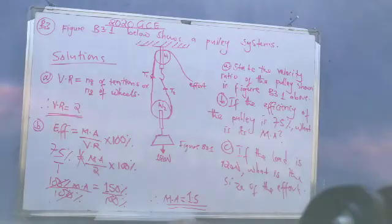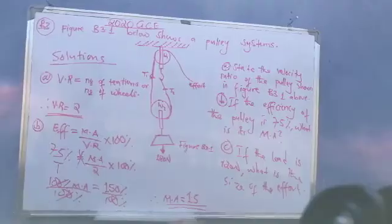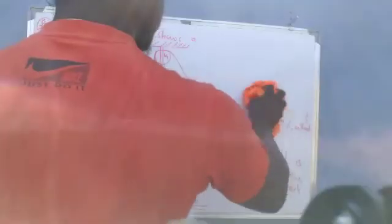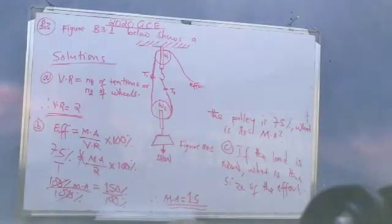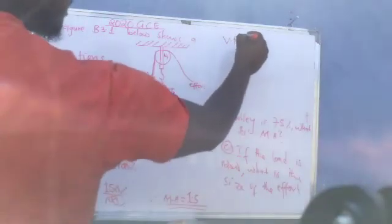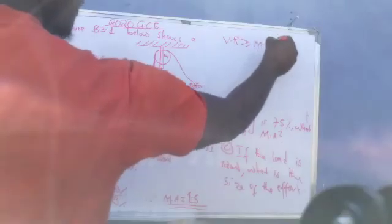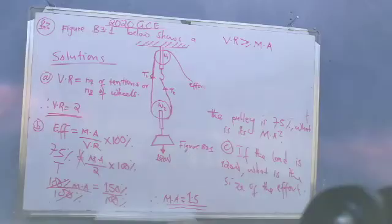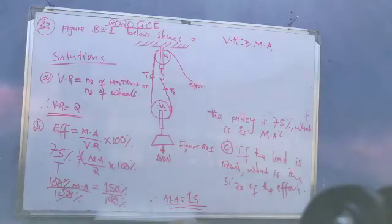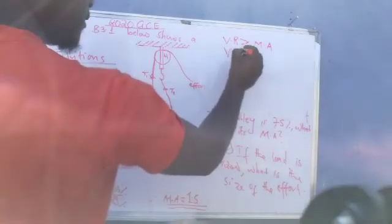You have to know that mechanical advantage is always less than the velocity ratio. So if the mechanical advantage is equal to velocity ratio, just know that you've been given an ideal simple machine. The simple machine efficiency is 100% when mechanical advantage is equal to the velocity ratio. So velocity ratio is greater than or equal to mechanical advantage. The velocity ratio is never less than mechanical advantage.